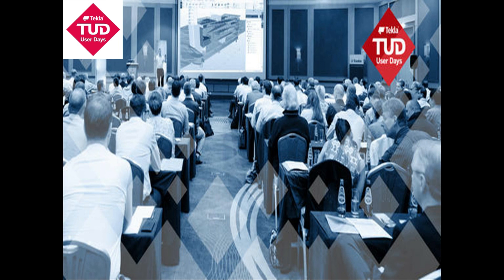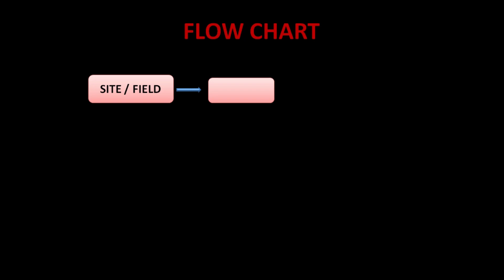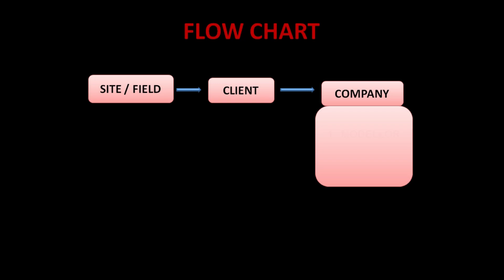Now let us see the project workflow flowchart. For example, I am an owner — I have a site and want to construct a commercial or residential building. I approach the client, who is the SEOR — Structural Engineer of Record. I express my ideas, and the structural engineer creates design drawings. The structural engineer then sends those design drawings to a Tekla-related company. In that company there is a modeler, a detailer, and a checker.